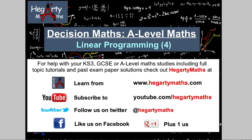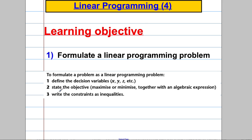Hi there and welcome to another video from Hegarty Maths. It's Mr. Hegarty here. We're doing a Decision Maths A-level video — it's the fourth one on linear programming. This video is all about formulating a linear programming problem. We've had three videos before covering some of the skills we'll need. This is the first one where we're actually talking about what linear programming is. A linear programming problem is where you want to maximize something like profit or minimize something like costs, with certain restrictions in place — like restrictions on the number of hours you can work or the number of raw materials you have.